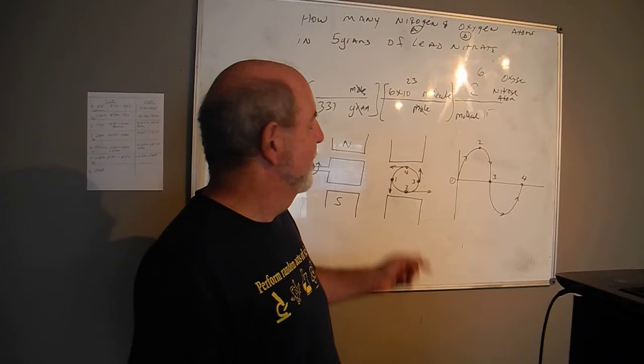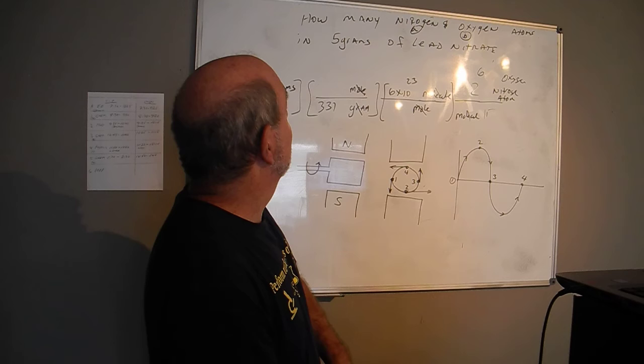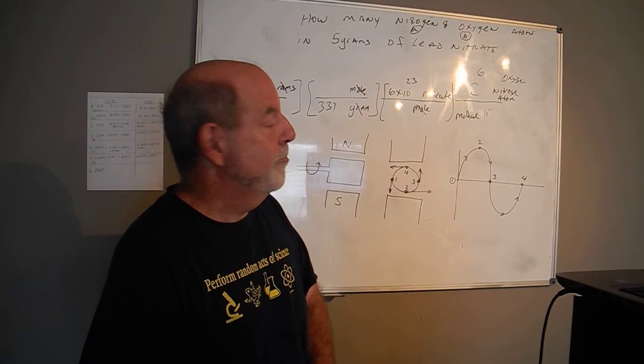This is what we did today in electrical engineering in first period, and then later in chemistry we figured out how many nitrogen and oxygen atoms are there in five grams of lead nitrate.